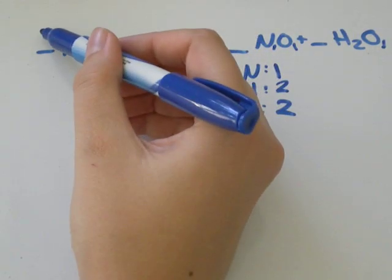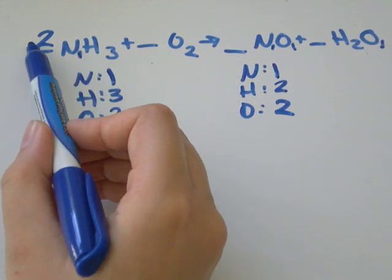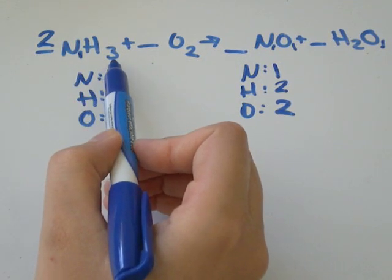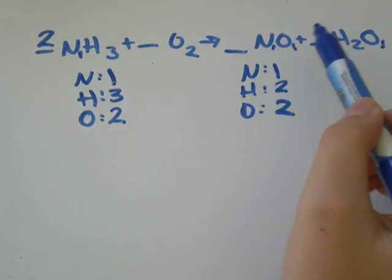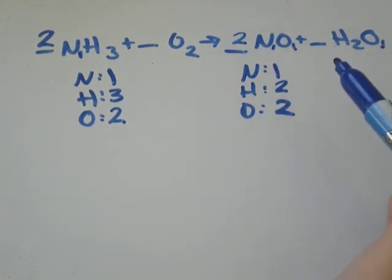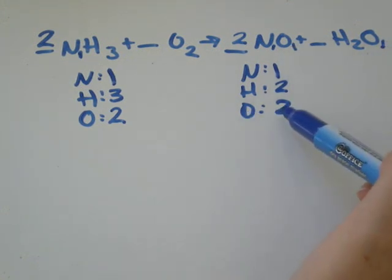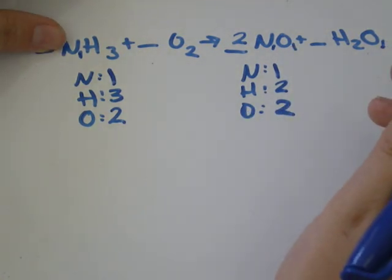Well, let's say I added a two over here. Now I've got two nitrogen and six hydrogen. Over here I have one nitrogen and two hydrogen. So maybe I added a two over here. Now I'd have two times one, I'd have two, three oxygen. Well, that doesn't balance anymore. So that's not going to work.